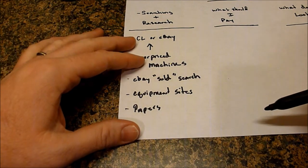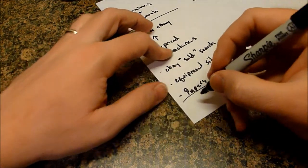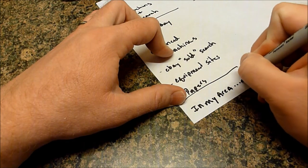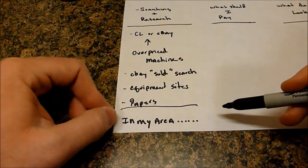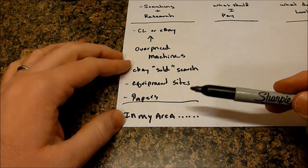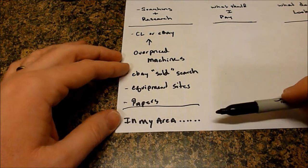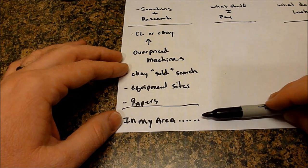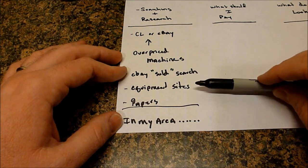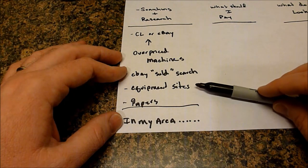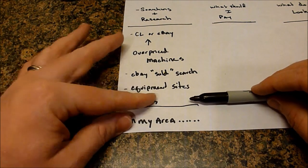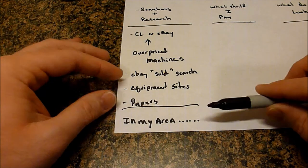Also, something else that goes into the searching and researching: Common phrase I see all the time, in my area, and it's generally followed by I'm not going to find anything that cheap in my area, everything's always so expensive. That is driven by this. When you're searching on Craigslist, when you say not in my area everything's so expensive, that's because everybody is looking at these prices. They're not looking at sold. They're not looking at equipment sites.